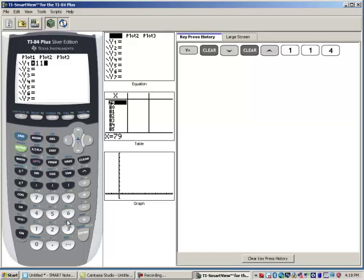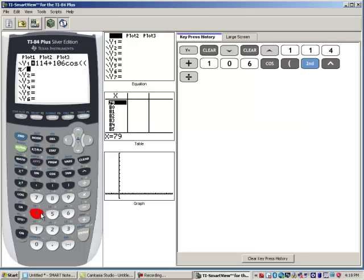Let's clear that and let's clear that. So let's type this in. 114 plus 106 cosine, parentheses, π divided by 41. Make sure I didn't do 411 there. And then x minus 50. Close parentheses there.